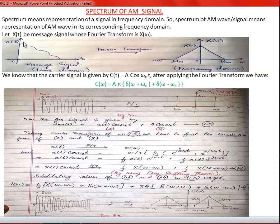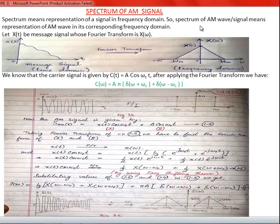Let X(t) be the message signal whose Fourier transform is X(ω). You can see here the message signal X(t) in the time domain. Applying Fourier transform to this signal, we have its frequency domain version — the spectrum of the corresponding X(t) — represented by X(ω).